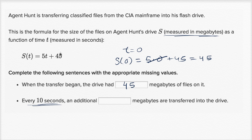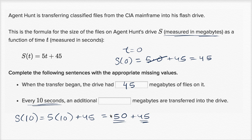How many megabytes are in his drive? So we could say S of 10 is going to be five times 10 plus 45, which is equal to 50 plus 45. So at time equals zero, there were 45 megabytes. And 10 seconds later, there's now 50 plus 45 megabytes. So in 10 seconds, an extra 50 megabytes are transferred into the drive.